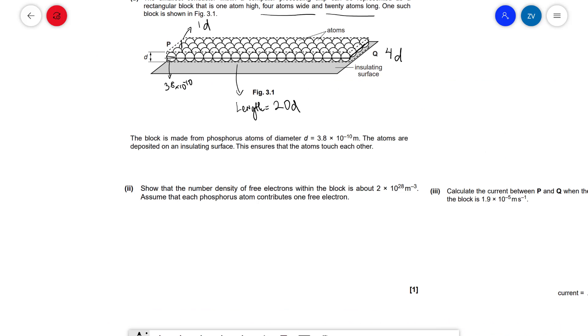So the next part of the question would be to show that the number density of free electrons in the block is about 2 × 10²⁸. Well, the number density is equal to the number of charge carriers divided by the volume. Now the number of charge carriers is going to be 20 × 4 because this is 20 by 4, so that's essentially 80.